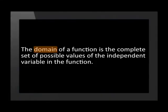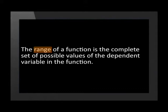The domain of a function is the complete set of possible values of the independent variable in the function. The range of a function is the complete set of possible values of the dependent variables in the function. This means that the domain of a function is all the possible input values which allow the function or process to work. The range of the function is all the possible output values that are the result of the process or function.